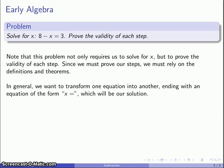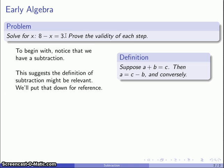So where can we start? Well, the first thing we might notice here is that we actually have a subtraction. So let's go ahead and pull up our definition of subtraction. That's based on addition: if we know that a plus b is equal to c, then a is equal to c minus b, and conversely.